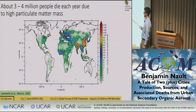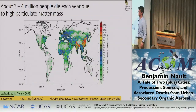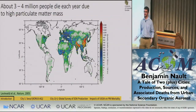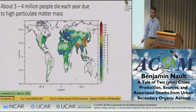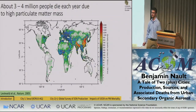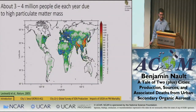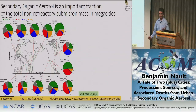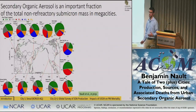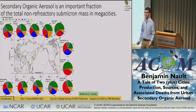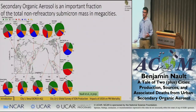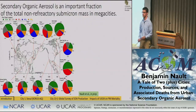Eastern China, Seoul, Tokyo, Paris, and London all highlight with very high mortality rates because they have high concentrations of particulate matter. As you increase the particulate matter, you get more premature deaths. But we need to know the composition so we can start targeting emissions.